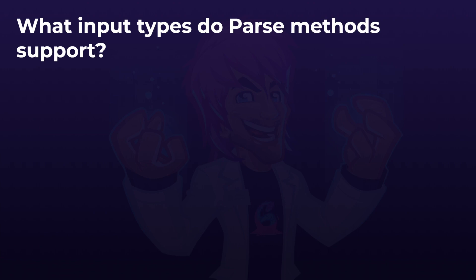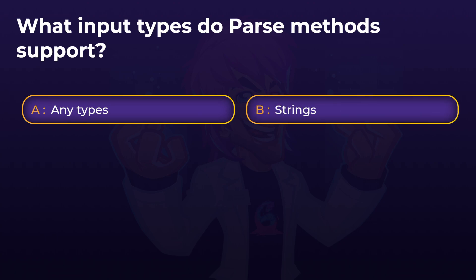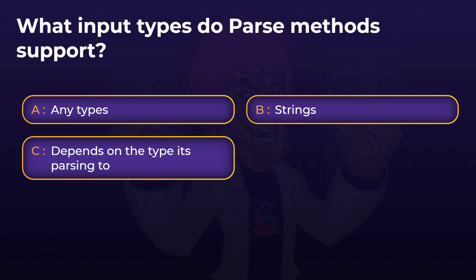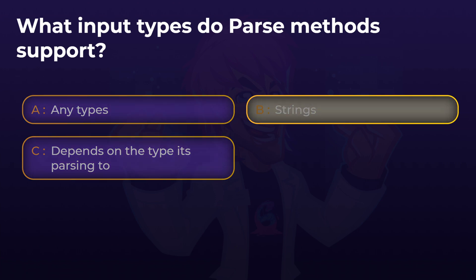What input types do parse methods support? Is it any types? Is it strings? Or does it depend on the type it's parsing to? The answer is: strings. The parse method only converts strings to other types — the whole purpose of parse is to take a string representation of something and convert it to many other types.